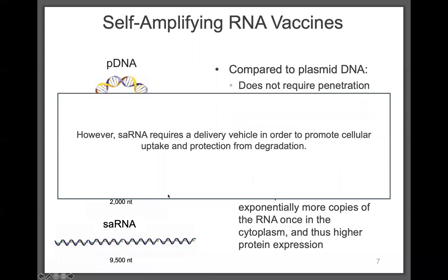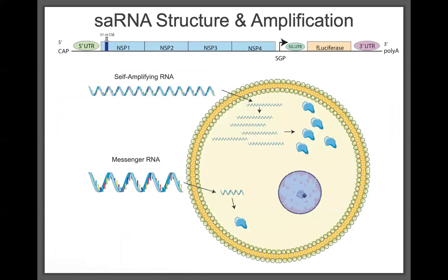Self-amplifying RNA requires a delivery vehicle to promote cellular uptake and protect it from degradation. The structure includes a 5' cap and 3' poly-A tail to protect from degradation, untranslated regions at both ends to aid replication, non-structural proteins derived from an alphavirus that form the replicase and copy the RNA once inside a cell, and downstream of the subgenomic promoter, any gene of interest — such as luciferase in many of our studies, or a vaccine antigen.